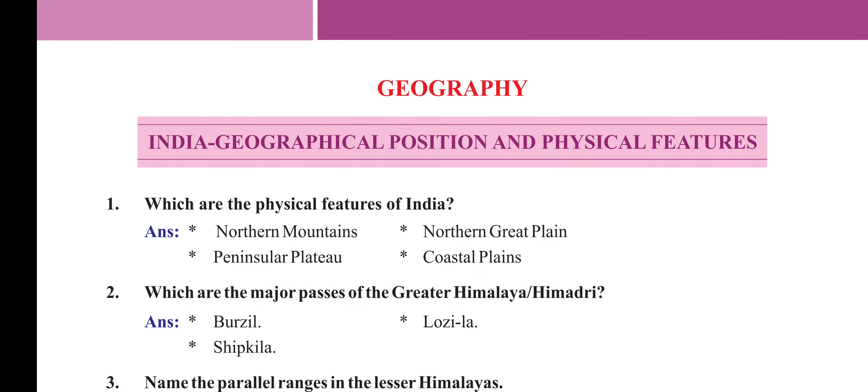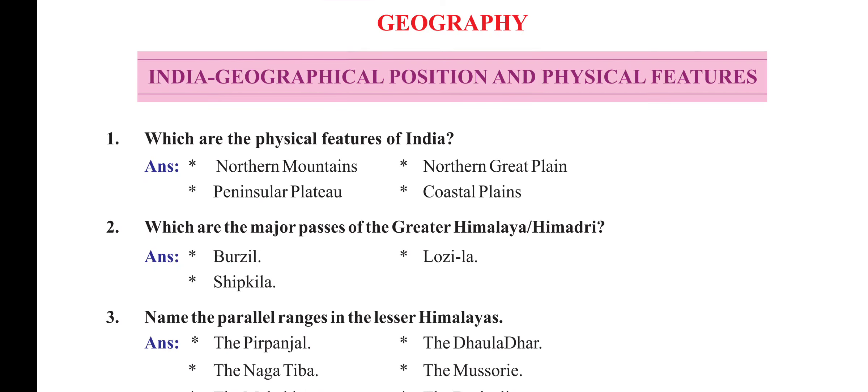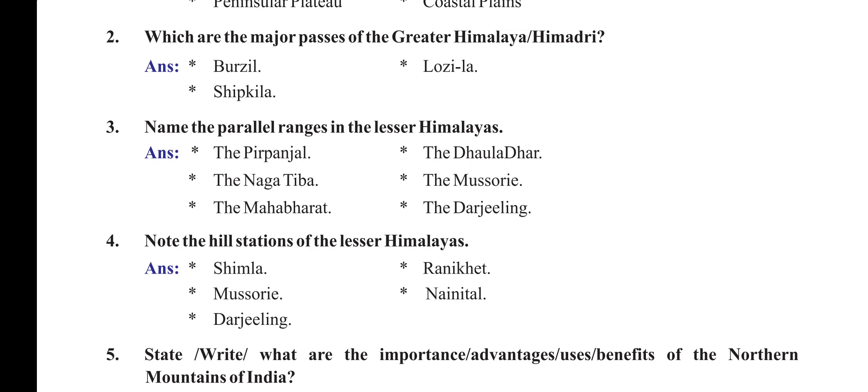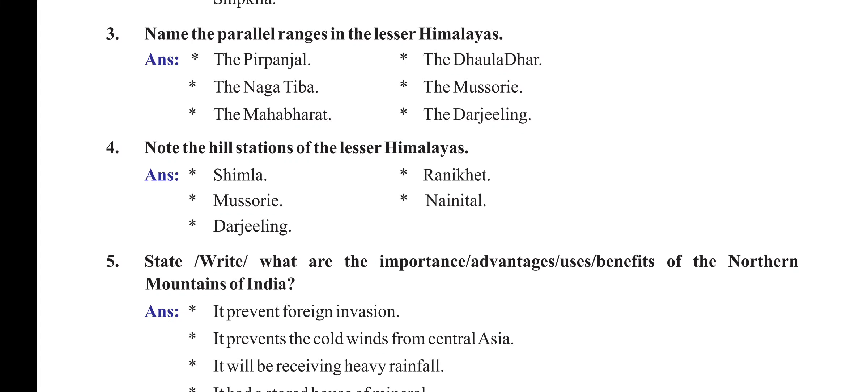In the geography section — India's geographical position and physical features. Which are the physical features of India? The northern mountains, the northern great plain, the peninsula plateau, and the coastal plains. Which are the major passes of the greater Himalaya or Himadri? The Burzil, the Zojila, and the Shipkila. Name the parallel ranges in the lesser Himalayas: the Pirpanjal, the Dhauladhar, the Nagtibba, the Mussoorie, the Mahabharat, and the Darjeeling range.